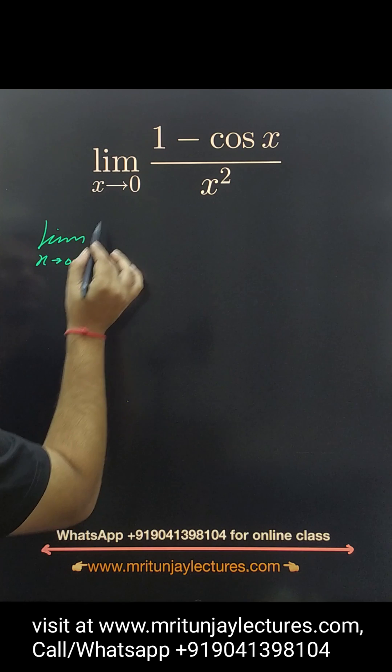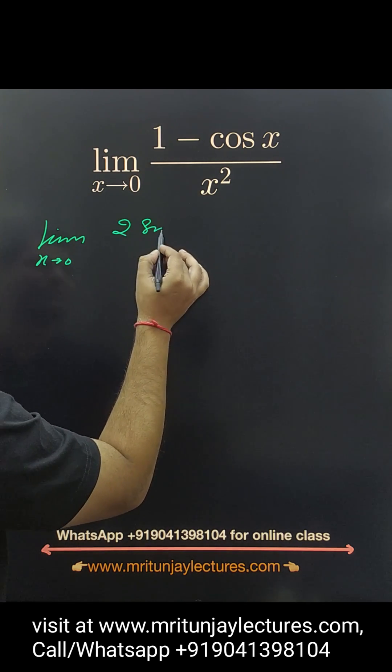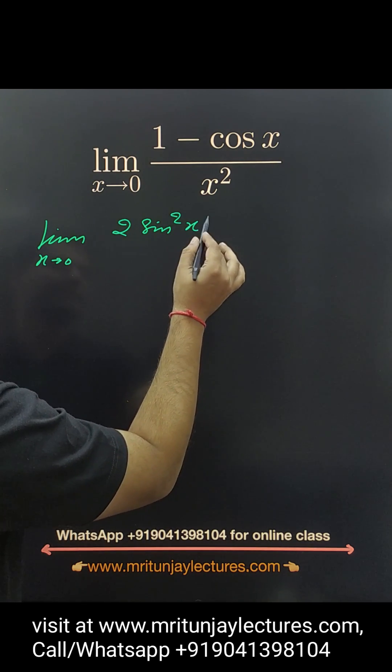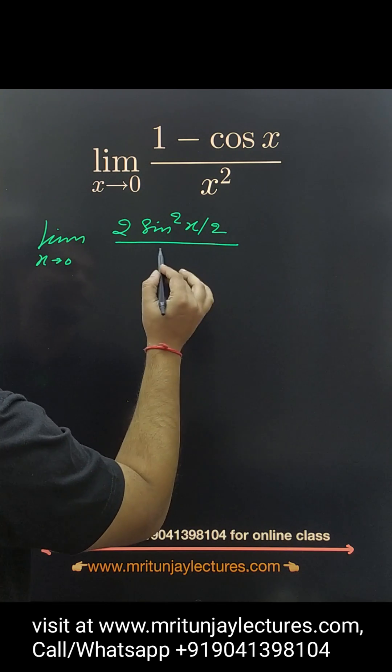Limit x tends to 0, this one written as 2 sin square x by 2, divided by x square.